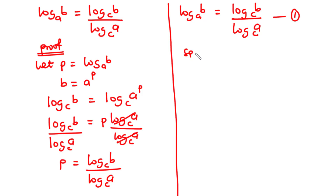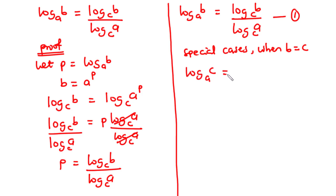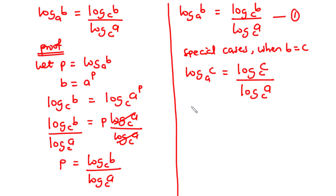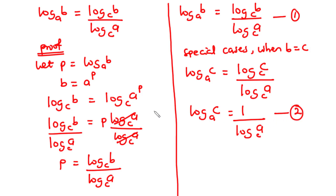In special cases, when B is equal to C, then we have log C base A. We substitute C in place of B in equation 1: log C base A equals log C base C divided by log A base C. We know that log of the same base is equal to 1, so this equation reduces to log C base A equals 1 divided by log A base C. This is very important as far as this lesson is concerned.